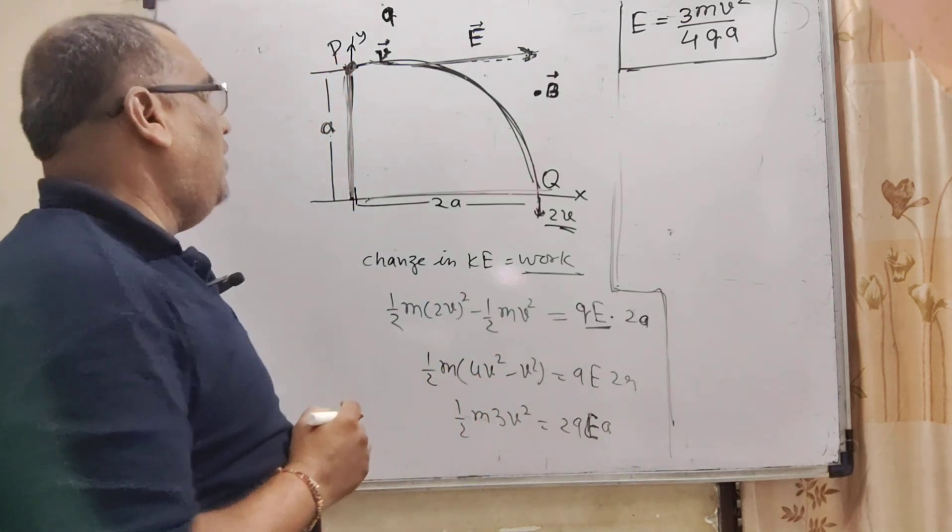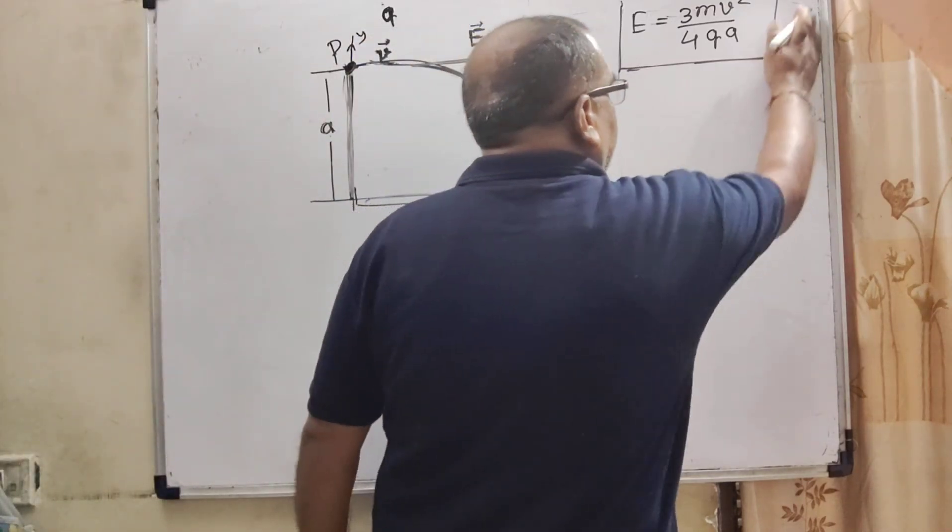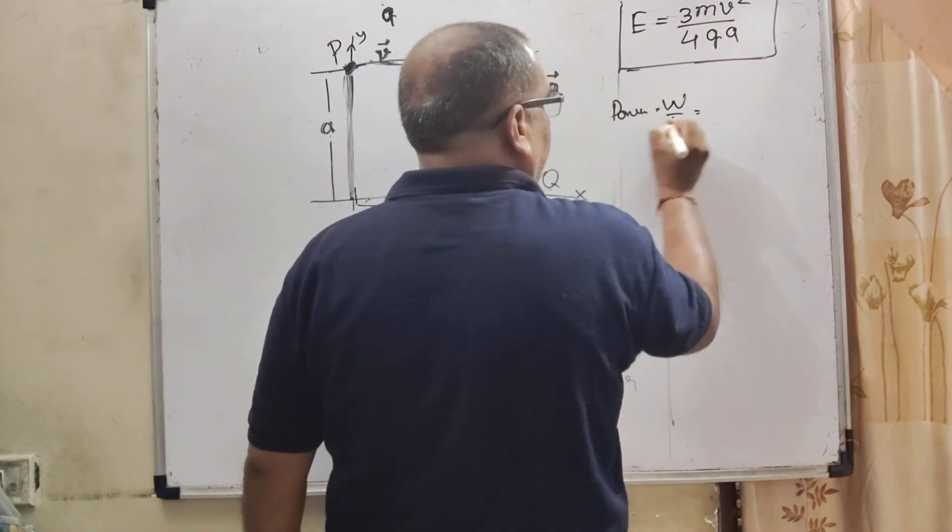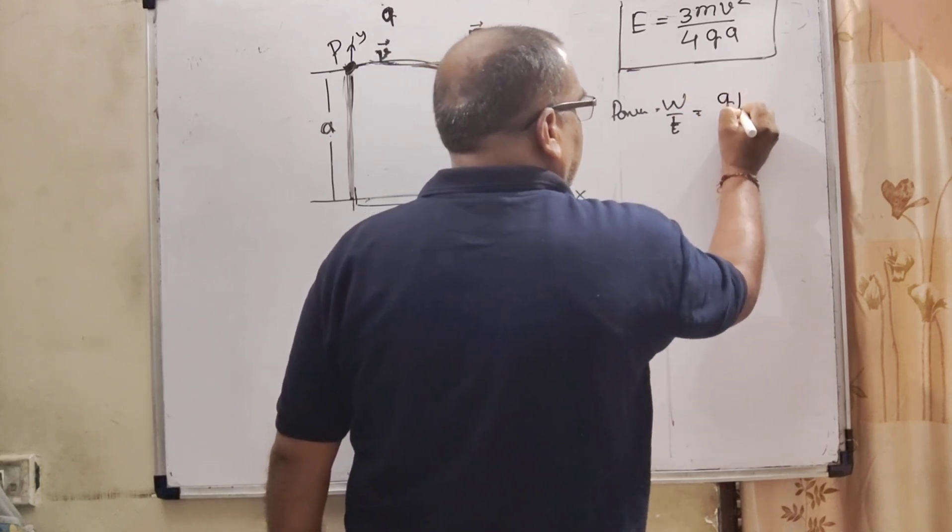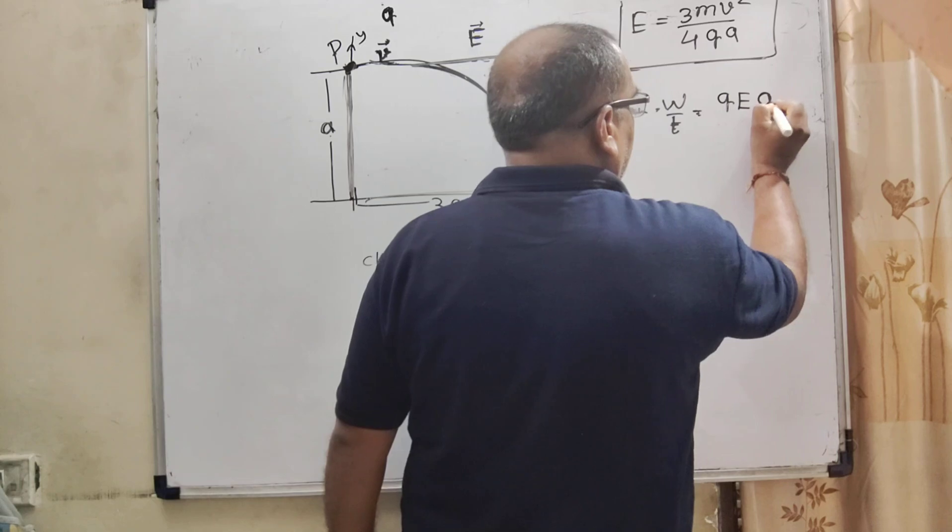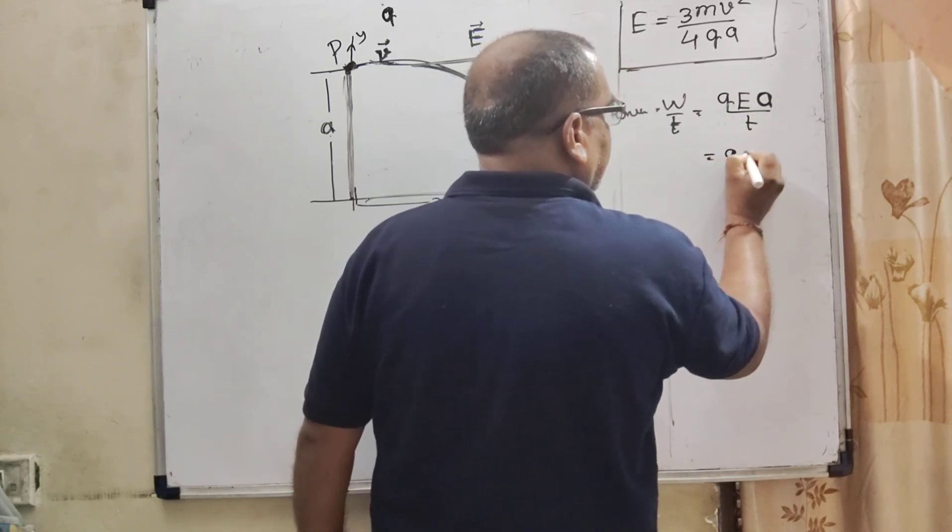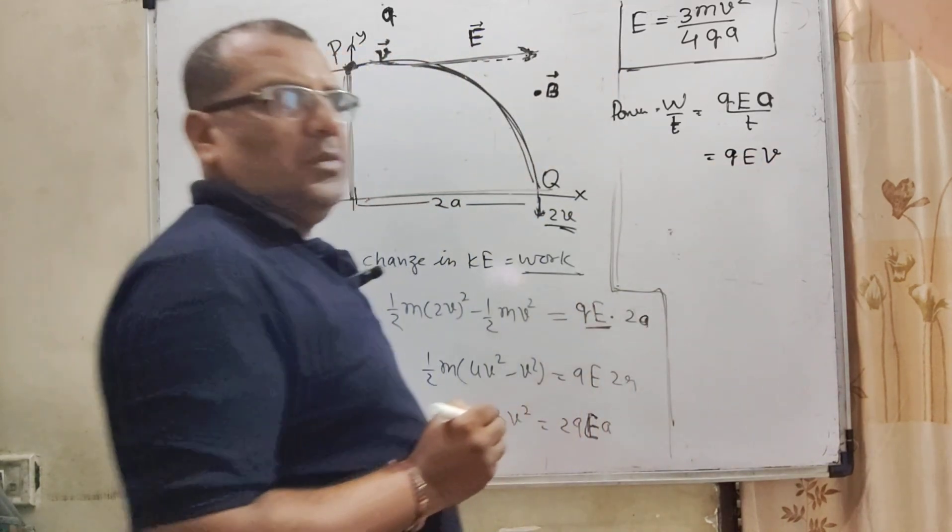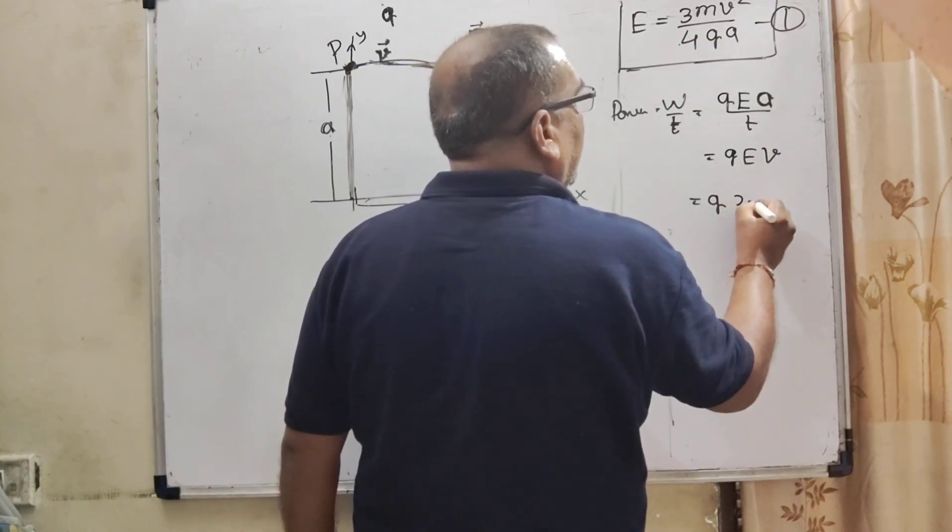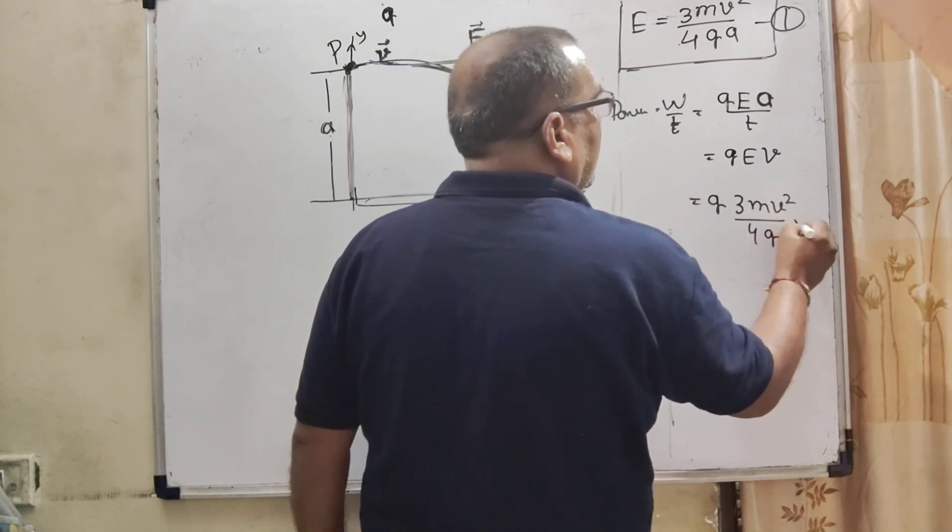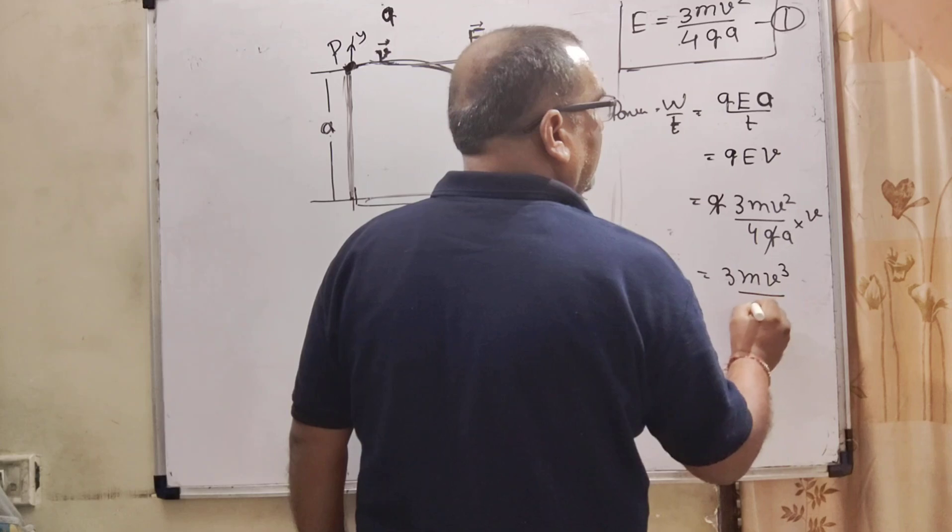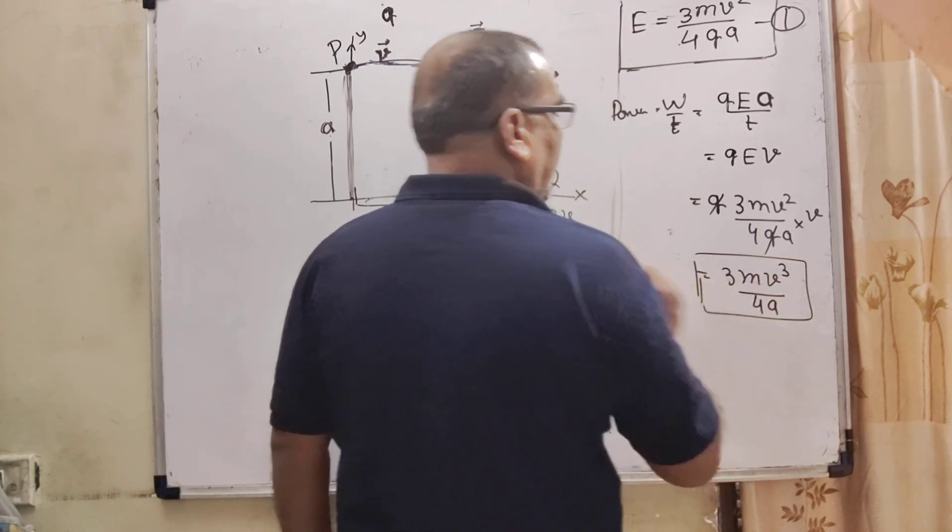Now, second thing we have to calculate: rate of work done. We know that it means power. So power equals W by T. Here W means work. So here, force into displacement. What is force? Electric field, that is Q E, and displacement in this direction that is A upon T. So displacement upon time is velocity. So A by T is V, and substitute the value of E from the first equation. So here, Q times 3 M V square upon 4 Q A times V. So Q cancels out: 3 M V cube upon 4A. This is rate of work done at the point P.